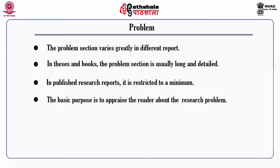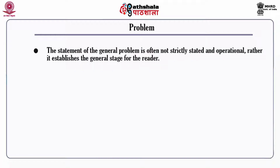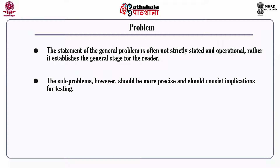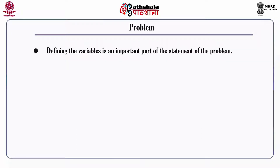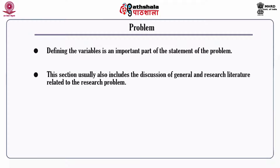The basic purpose is to appraise the reader about the research report. Sometimes the problem is stated in question form. The statement of the general problem is often not strictly stated and operational; rather, it establishes the general stage for the reader. The sub-problems, however, should be more precise and should consist of implications for testing. Some report writers state the general and specific hypothesis rather than stating the problems. Defining the variables is an important part of the statement of the problem. This section usually also includes the discussion of general and research literature related to the research problem.